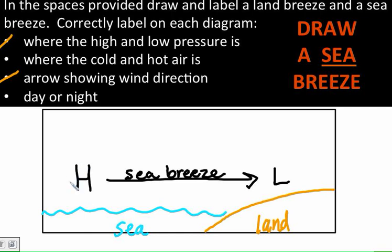Because this is my high pressure, I can automatically figure out this is going to be my cool sinking air. Over here with my low pressure, I automatically know this is going to be my warm rising air. So I've got my high and low pressure, I've got my cold and hot air.